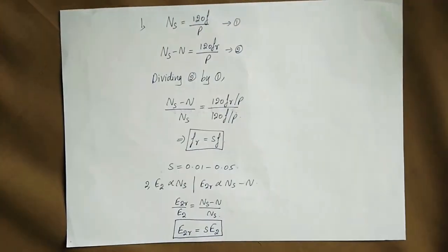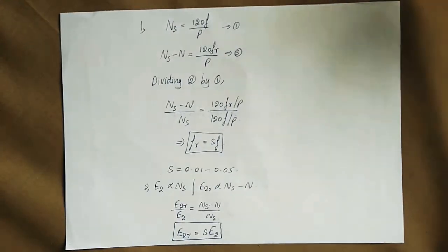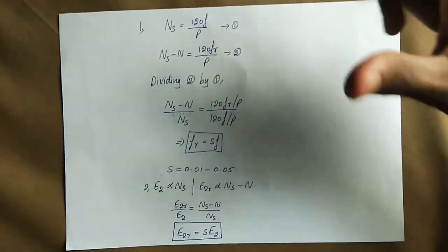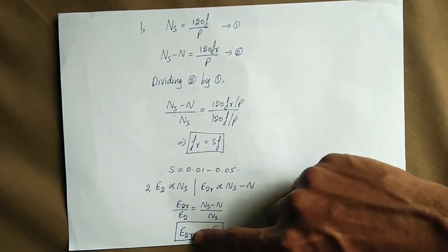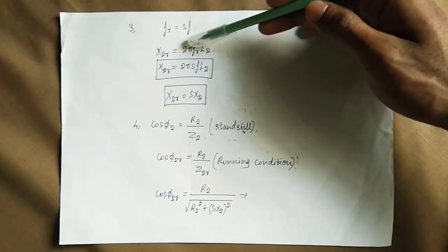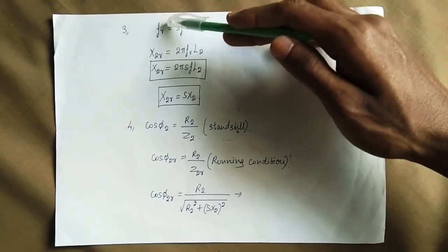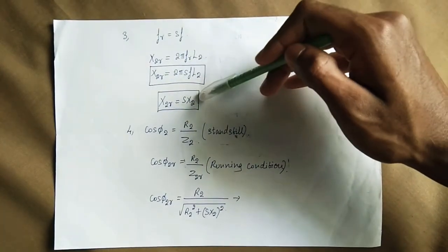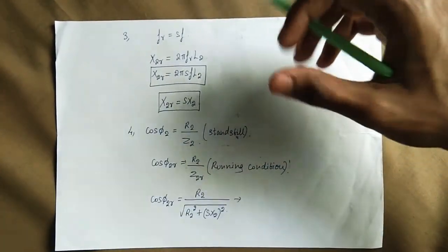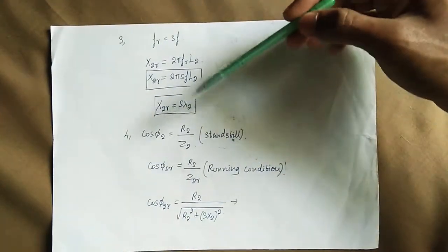The rotor induced EMF at running condition is S times the standstill induced EMF. For the reactance: X2R equals 2π × Fr × L2. Since Fr equals S × F, substituting gives X2R equals S times the standstill reactance X2. So the running reactance is S times the normal reactance.